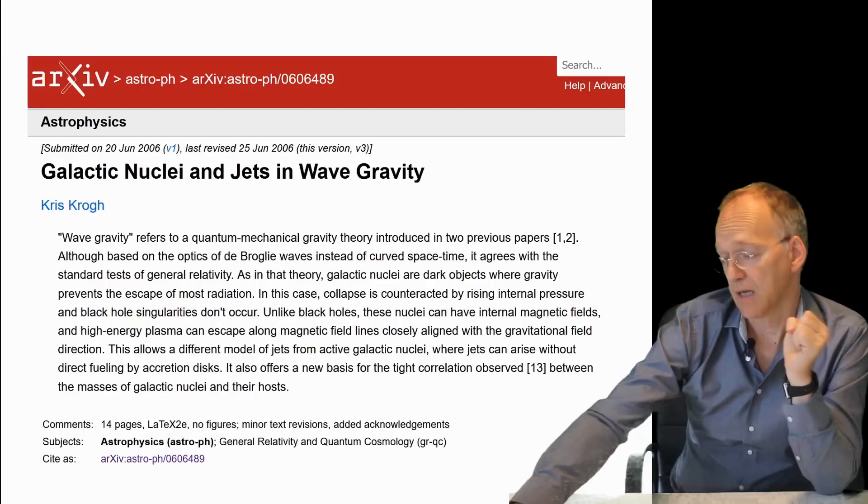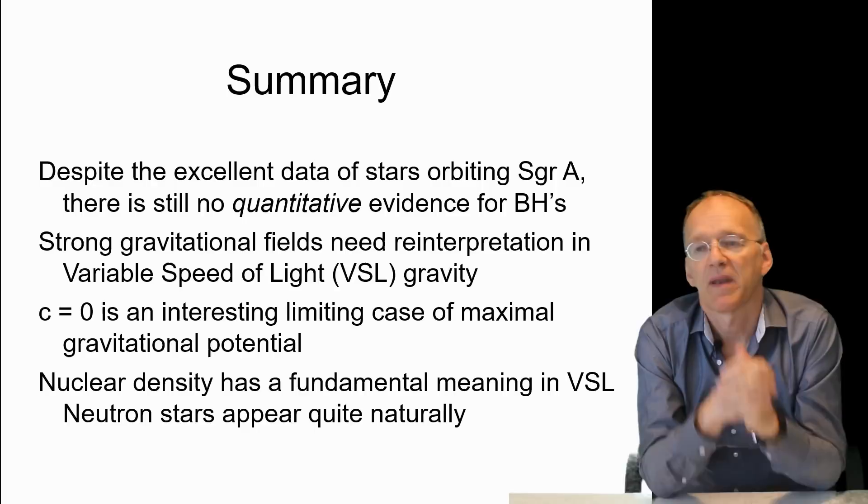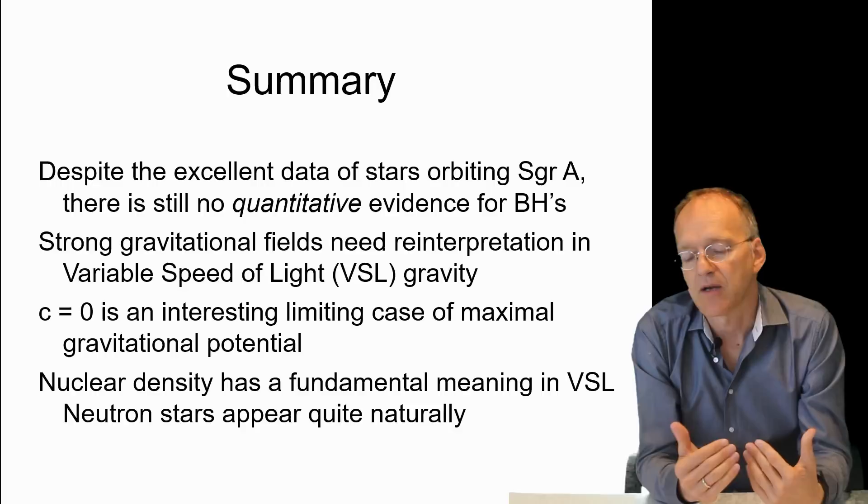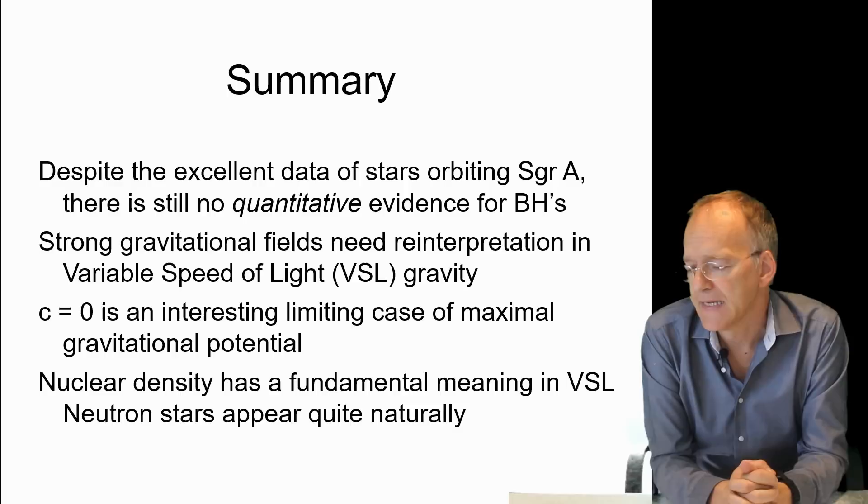To conclude, variable speed of light is compatible—there is nothing that contradicts the idea of black holes. However, black holes are not yet backed by quantitative evidence because we do not yet have the observation of the Schwarzschild radius. So the field is open to reinterpretation, and it's certainly interesting to have a look at many of these intriguing cosmological and astrophysical phenomena in this aspect.